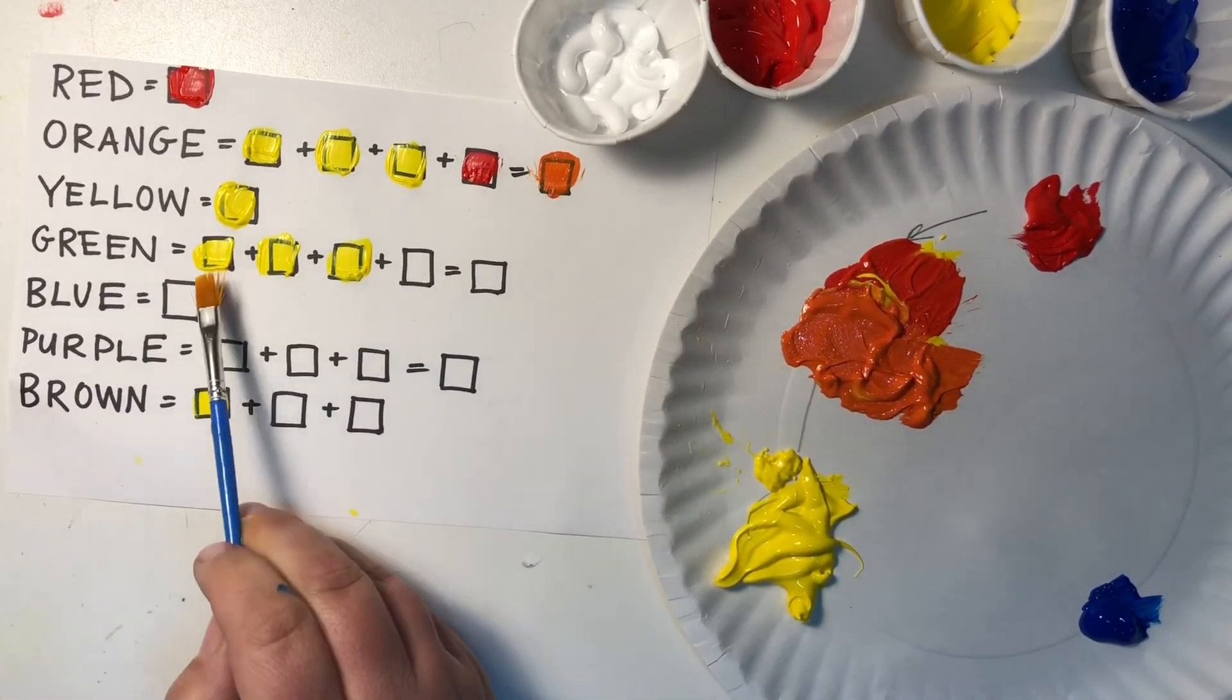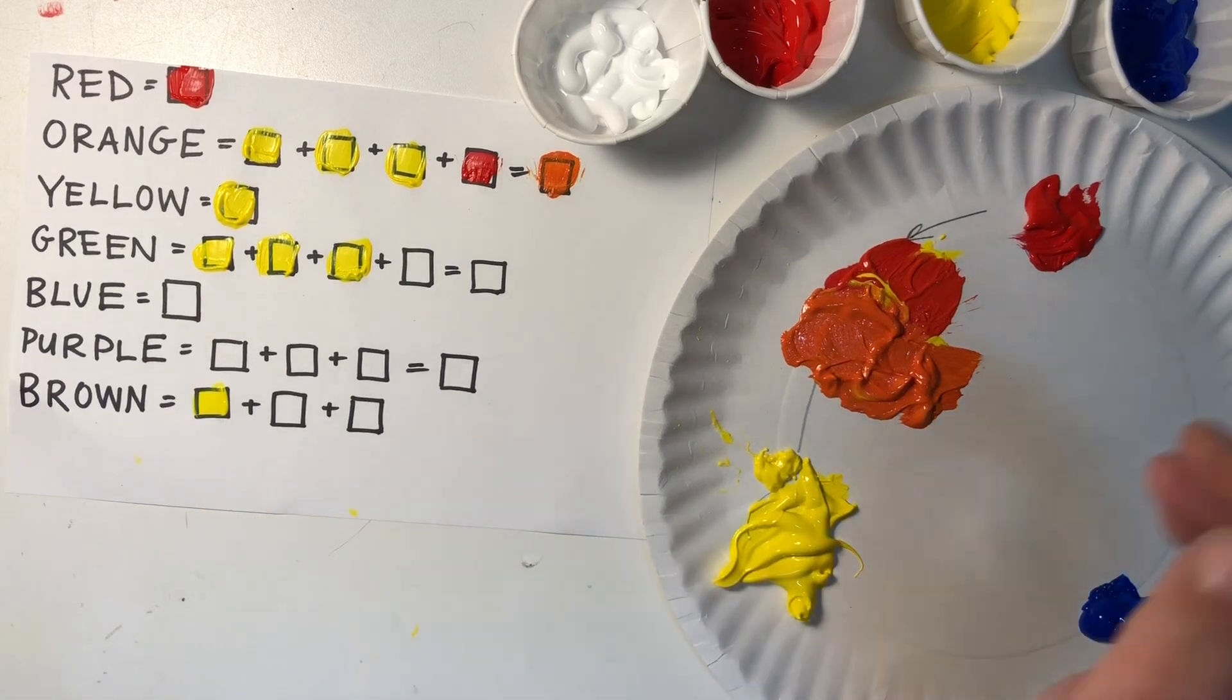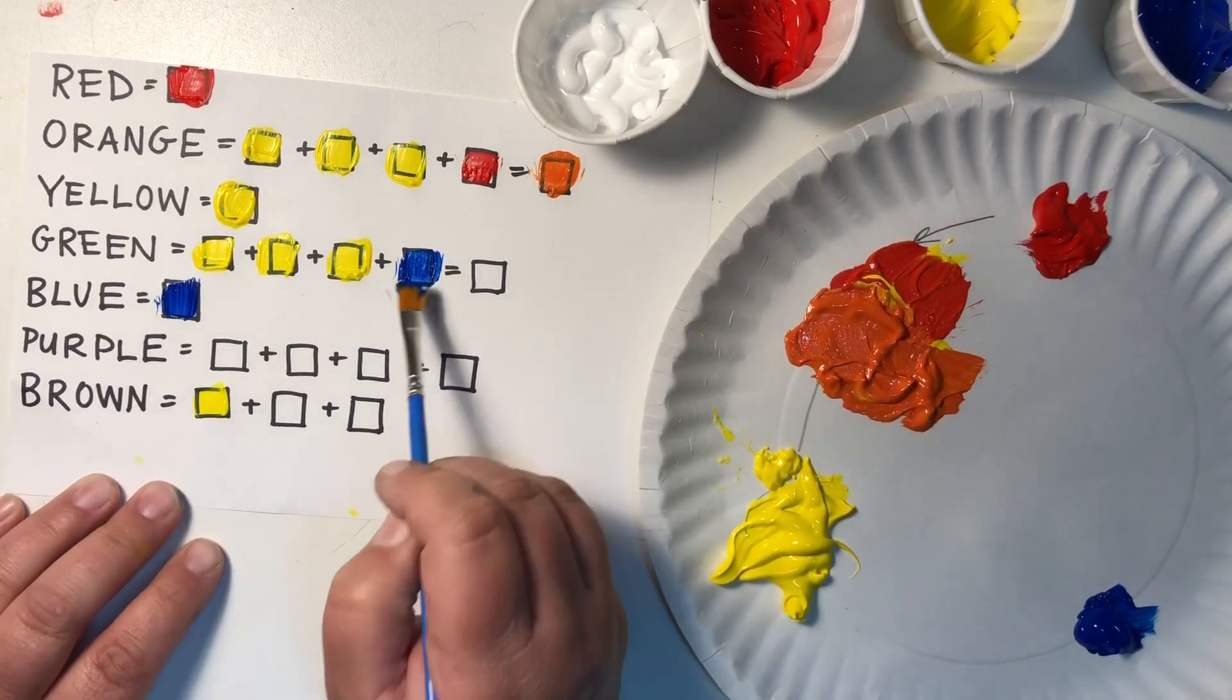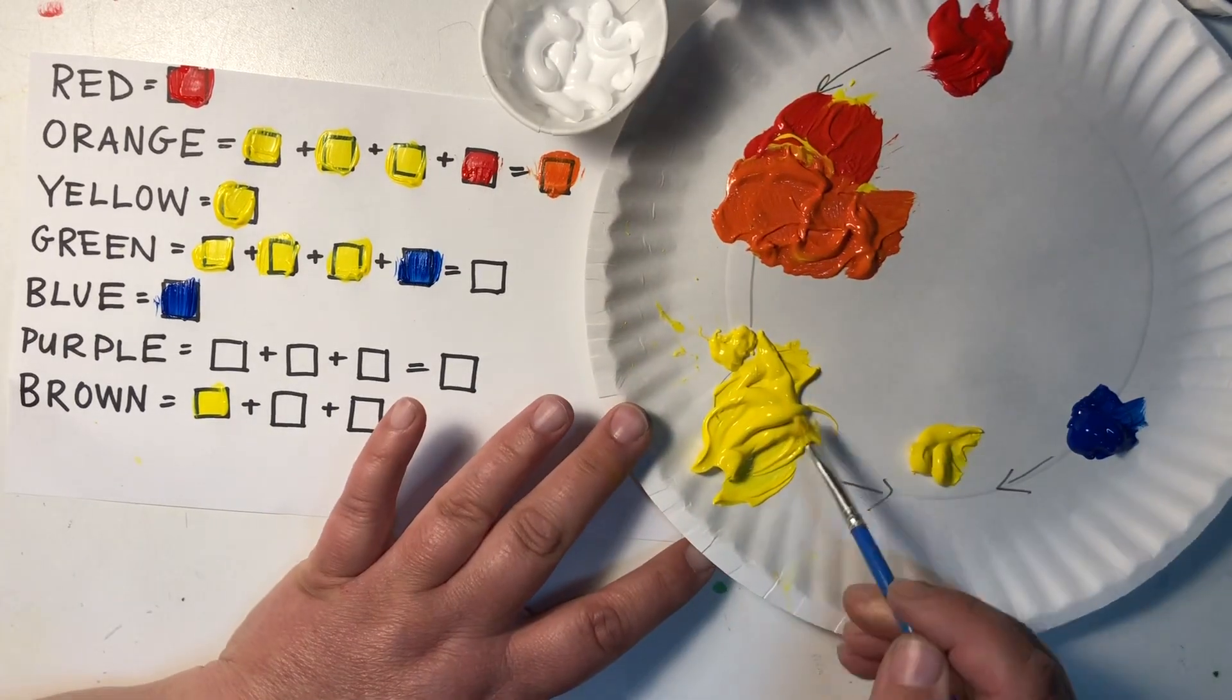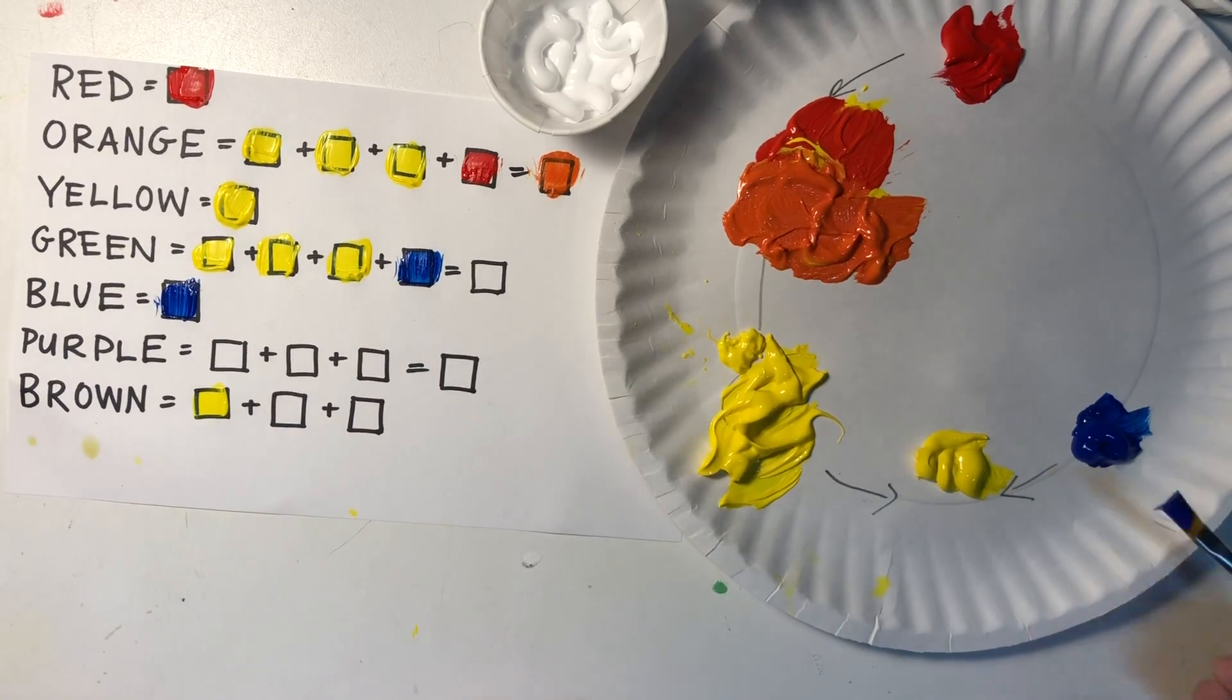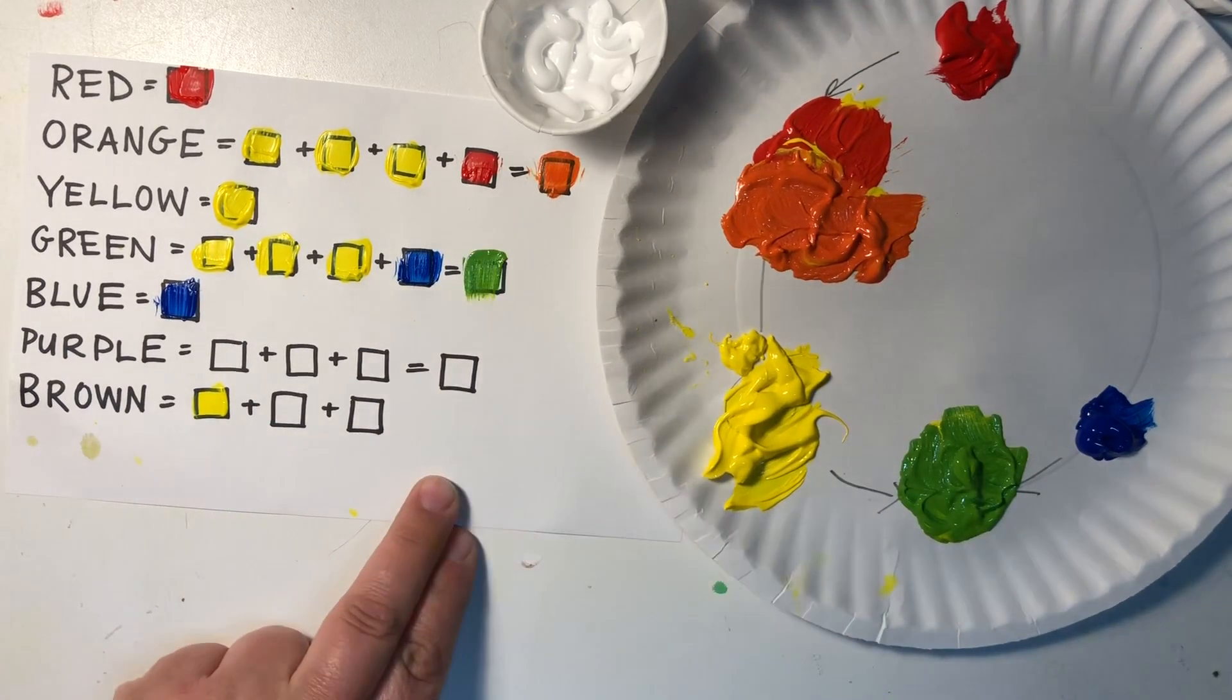Okay, let's make a nice green. For green, we're going to need three yellows and one blue. One, two, three yellows plus one blue. Look at that gorgeous green.